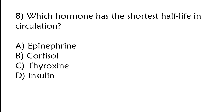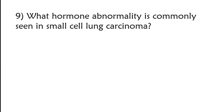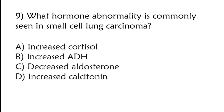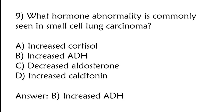What hormone abnormality is commonly seen in small cell lung carcinoma? A) Increased cortisol, B) Increased ADH, C) Decreased aldosterone, D) Increased calcitonin. The correct answer is option B: Increased ADH.